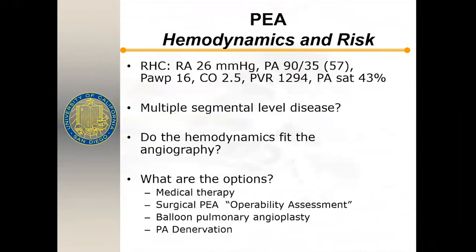The hemodynamics from our patient's right heart catheterization: RA pressure 26, pulmonary artery pressure 90 over 35 with a mean of 57, wedge pressure 16, cardiac output 2.5, pulmonary vascular resistance 1,294, and pulmonary artery saturation 43%. There was multiple segmental level disease. You have to ask: do the hemodynamics fit the angiography? Does the degree of pulmonary hypertension match the defects seen? If they don't match, you may be dealing with arterial pulmonary hypertension at the capillary level that won't improve with surgery.